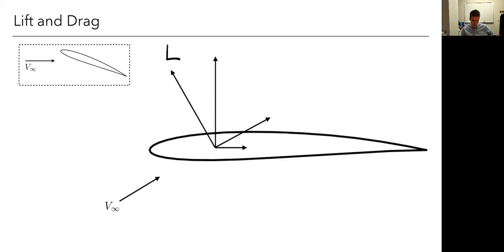Remember that lift is always defined perpendicular to the freestream direction. So here's freestream, whereas drag is in the direction of the freestream. And then the normal force is going to be perpendicular to some reference line, in this case a chord line for an airfoil, but some reference line of the body. And then usually we'll call this the axial or tangential force that's along that axis.